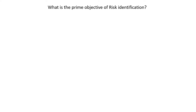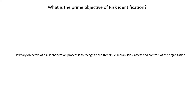One of the exam questions: What is the prime objective of risk identification? The primary objective of the risk identification process is to recognize the current threats, vulnerabilities, assets, and controls of the organization.